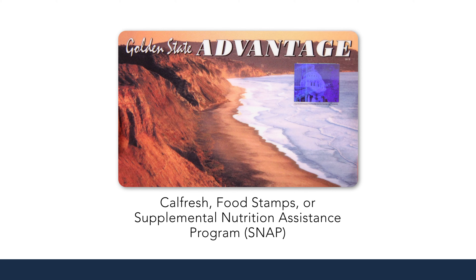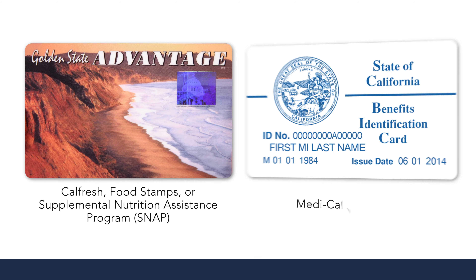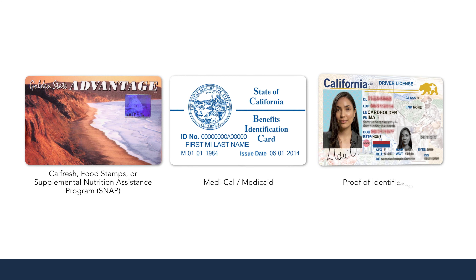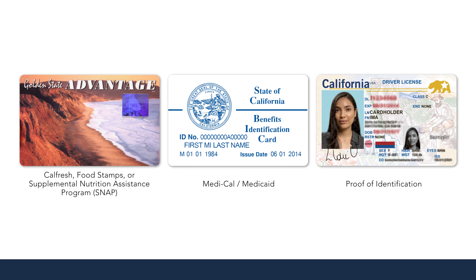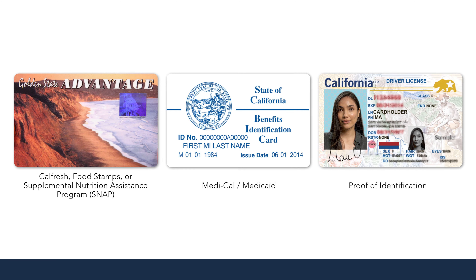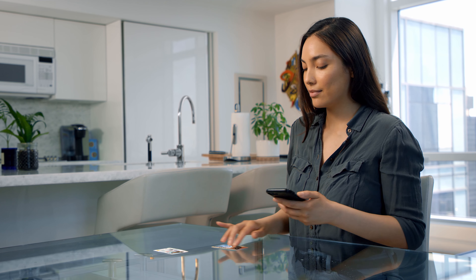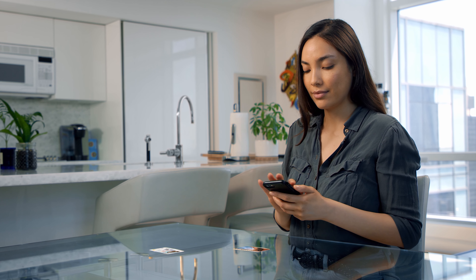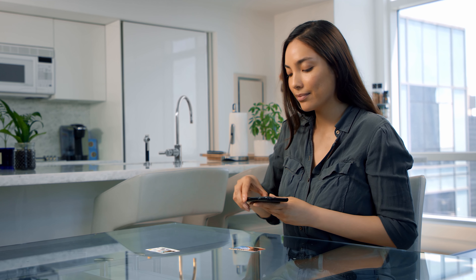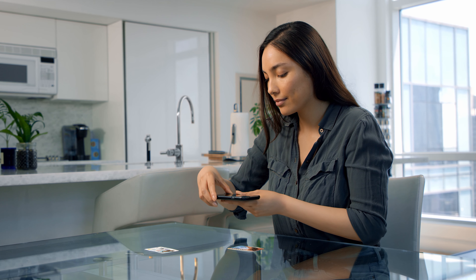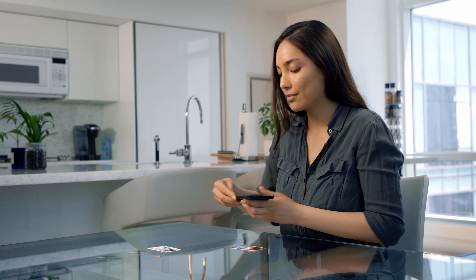To complete the registration, Californians that qualify will need proof of participation in a government program such as CalFresh, SNAP, Medi-Cal, or Medicaid, and a valid ID like a driver's license. Once you have gathered your documents, take separate and clear pictures of each — your proof of eligibility and your ID.